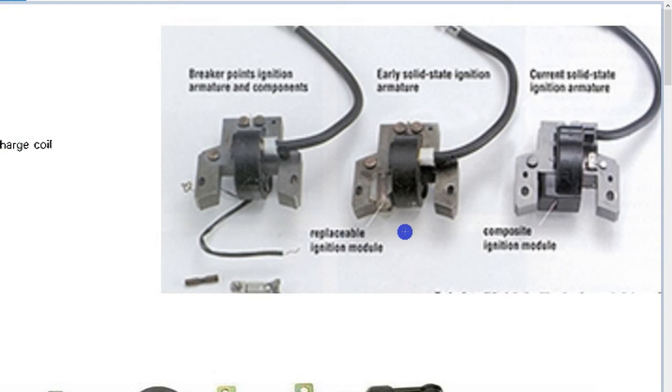So the coil fundamentally works the same way. It works by induction which is built up, and whether that's fed by battery or in this case by a charge coil by a rotating magnet in the engine, it's still doing the same thing of building up the primary voltage.